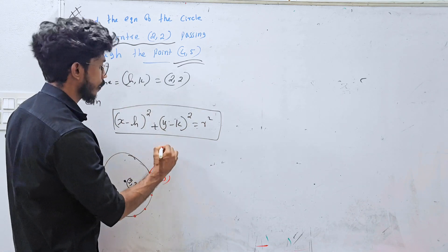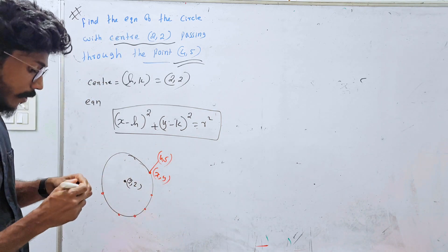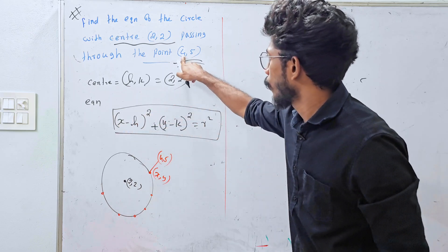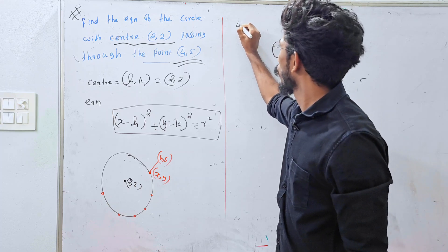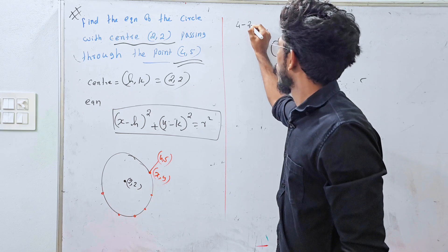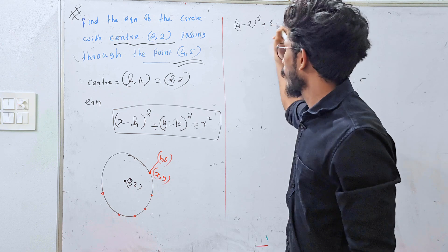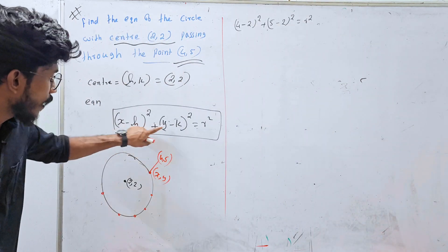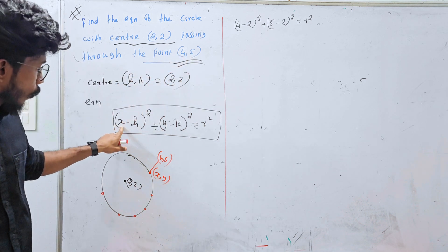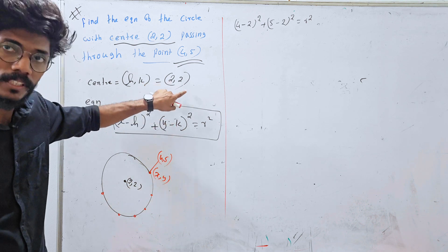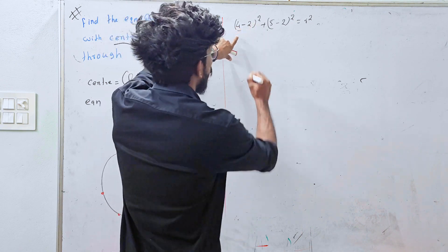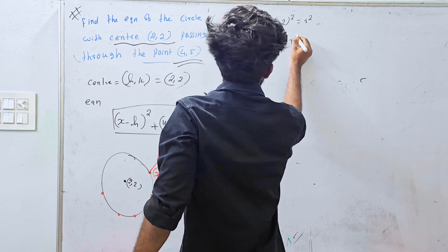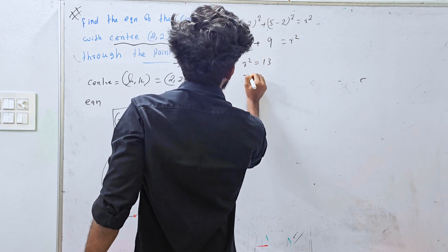The circle passes through one point: 4 and 5. To find the radius, substitute the passing point x equals 4, y equals 5 and the center h, k equals 2, 2 into the equation. r squared equals 4 minus 2 squared plus 5 minus 2 squared equals 4 plus 9 equals 13. So r squared equals 13, r equals root 13.